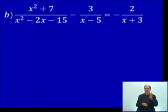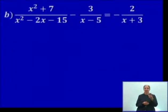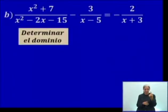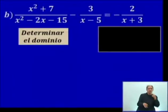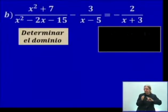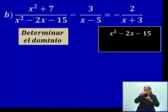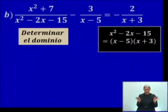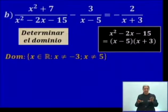Vamos a ver el siguiente ejemplo, el inciso B. El denominador del primer sumando es un trinomio. Son los factores primos, por tanto ¿qué tenemos que hacer primero? Vamos a determinar el dominio. Para determinar el dominio es necesario descomponer en factores los denominadores que lo necesiten, como en este caso. Es un trinomio simple. Factorizamos y determinamos el dominio.